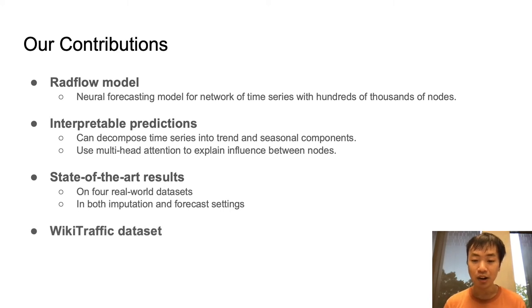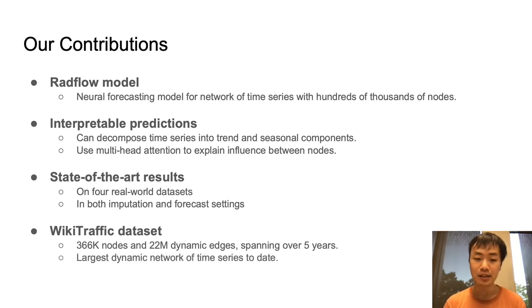And our final contribution comes in the form of a new benchmark dataset. We curated WikiTraffic, which contains 366,000 nodes and 22 million dynamic edges spanning over five years. And this is at least an order of magnitude bigger than previous datasets.